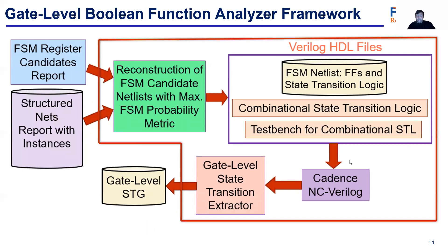The last stage of the FSM framework is the gate-level Boolean functional extractor. In this stage, FSM netlists with the maximum FSM probability metric are identified; they contain flip-flops and state transition logic. Combinational state transition logic and test benches for this logic are generated automatically, which are taken as input to the Cadence NC Verilog tool. Cadence NC Verilog generates a report in a structured format utilized by the gate-level STG transition extractor, which ultimately generates the gate-level STGs of all control FSMs present in the netlist.